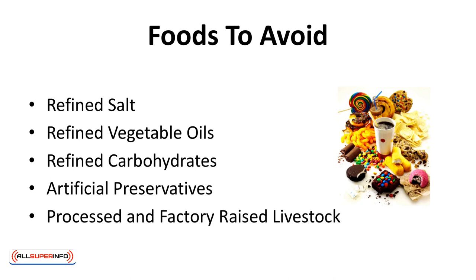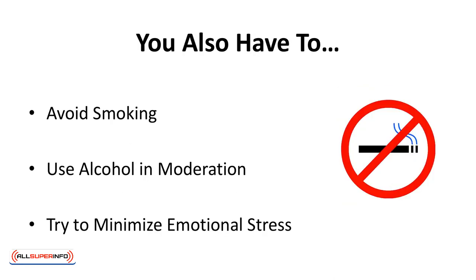Avoid all refined vegetable oils; use only cold-pressed or centrifugally extracted coconut, palm, or olive oils. Avoid refined carbohydrates, especially white flours and products. Avoid artificial preservatives, flavorings, and colorings. Avoid processed and factory-raised livestock. Avoid smoking or other people's second-hand smoke. Avoid or use alcohol in moderation. Try to minimize emotional stress as much as possible.